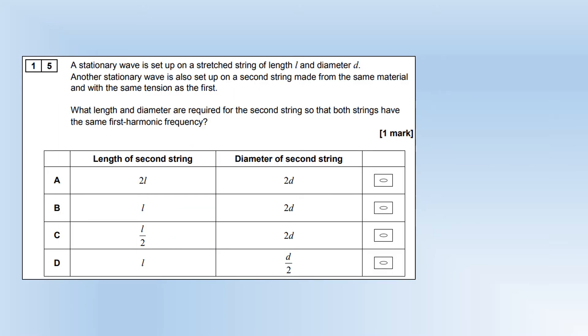A standing wave is set up on a stretched string of length L and diameter D. Another standing wave is also set up on a second string made from the same material and the same tension as the first. What length and diameter are required for the second string so that the strings both have the same first harmonic frequency? First, I'm going to get an expression for mu in terms of the density and the diameter of the string. They're the same material, so the density is going to be the same, but they've got different diameters.